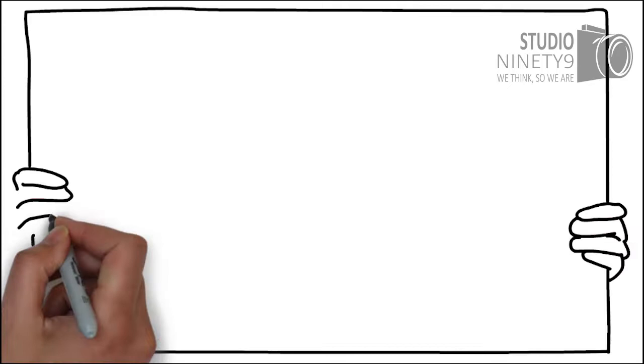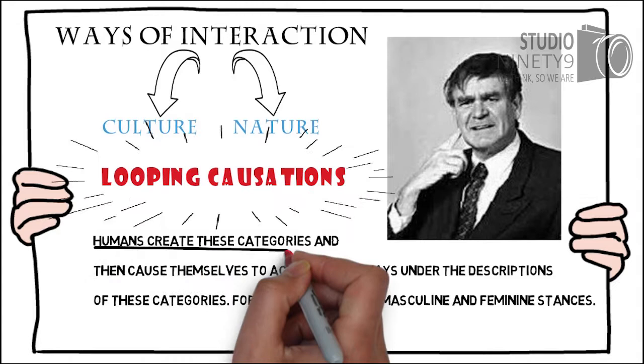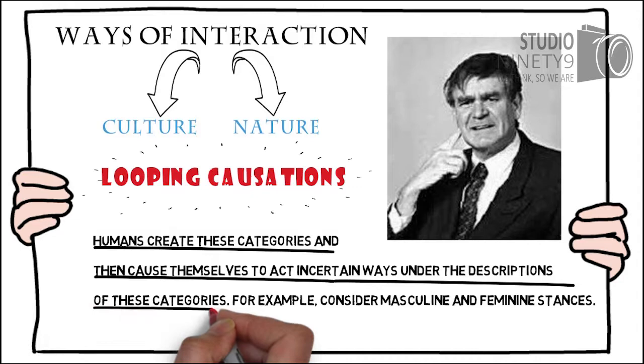Hacking says there are two ways we interact with classifications found in culture and nature. He calls these interactions looping causations. According to Hacking, humans create these categories and then cause themselves to act in certain ways under the descriptions of these categories.